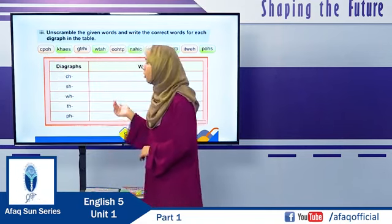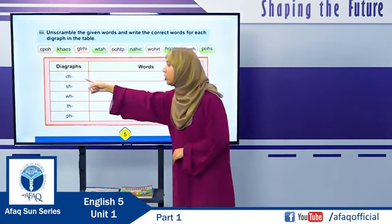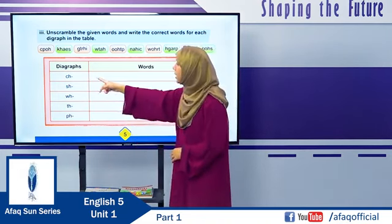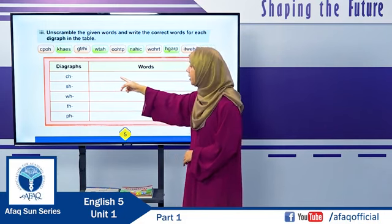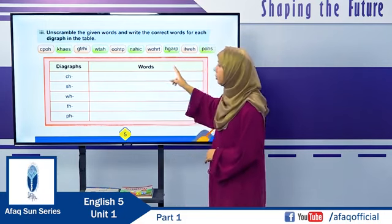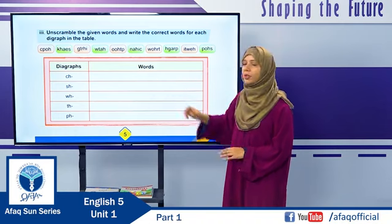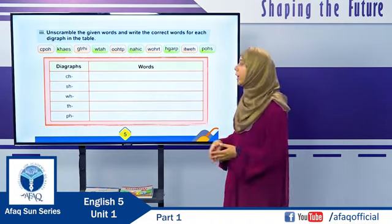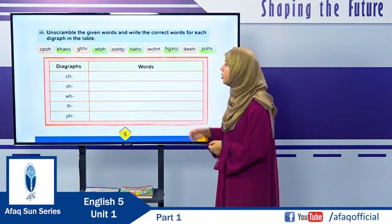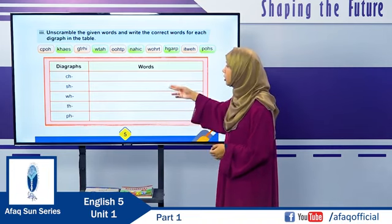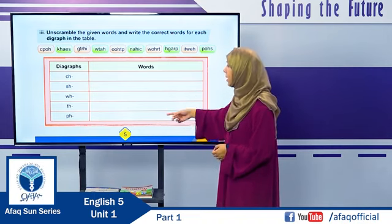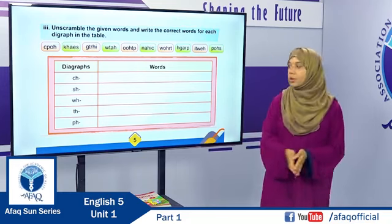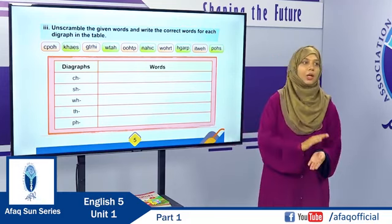We are going to write C-H-O-P in the CH column. This is a word that starts with the digraph CH. In the same way, you have to find more words starting with CH, SH, WH, TH, and PH. Now pause this video, complete this exercise, and then come back.